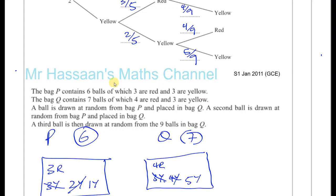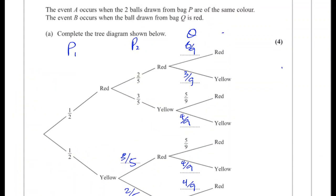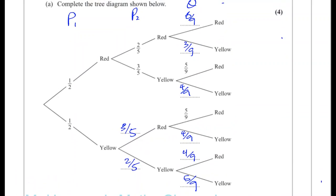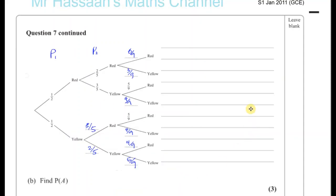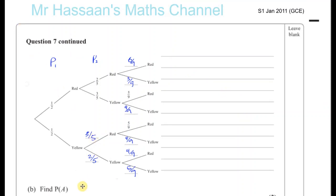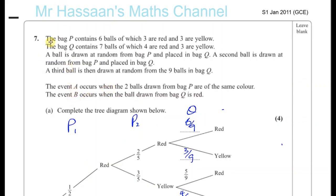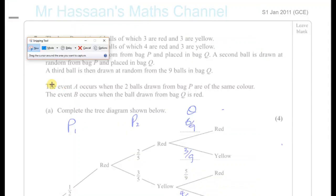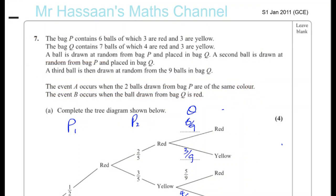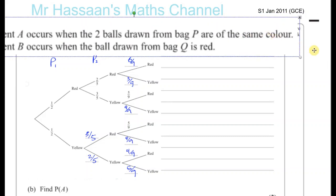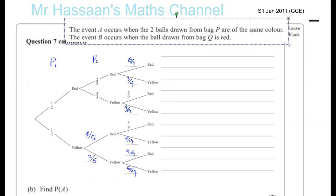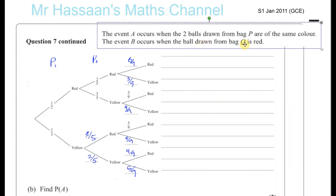That was a bit of a haul but we managed to get it done. I'll take this tree and put it on the next page to answer the questions. Event A is when the two balls drawn from bag P are of the same color. Event B is when the ball drawn from bag Q is red.